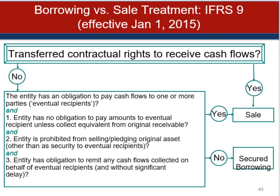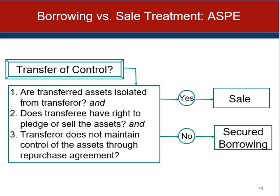Under IFRS 9, for accounts receivable without a significant financing component, the loss allowance is to be based on lifetime expected credit losses resulting from all possible default events over the life of the accounts receivable. Under ASPE, the main question is whether there is a transfer of control, using three questions: are the transferred assets isolated from the transferor; does the transferee have the right to pledge or sell the assets; and does the transferor not maintain control through a repurchase agreement? If all three are answered yes, it's a sale.